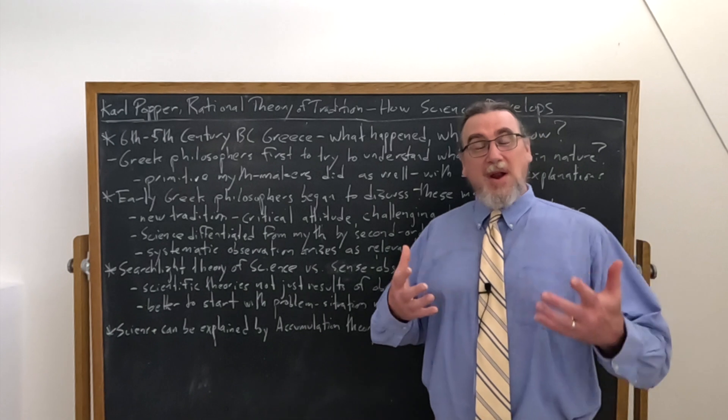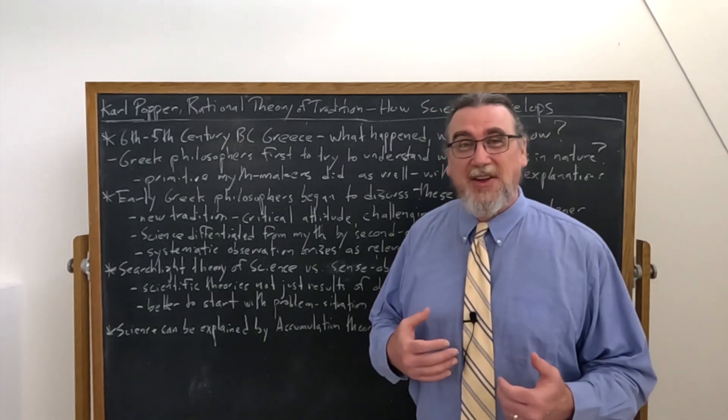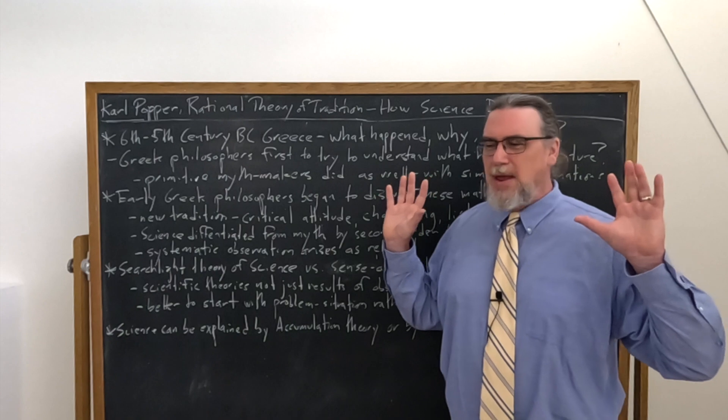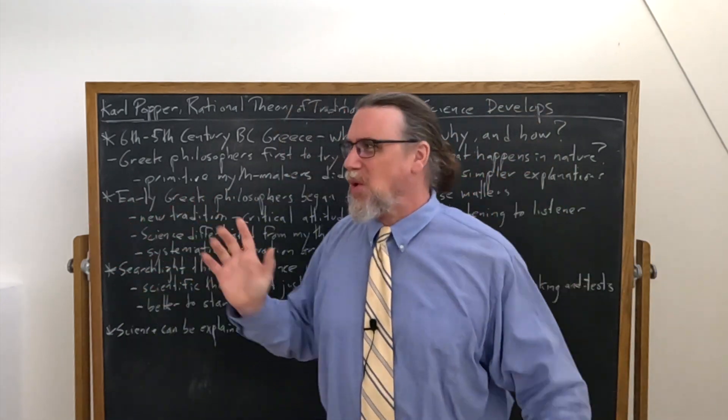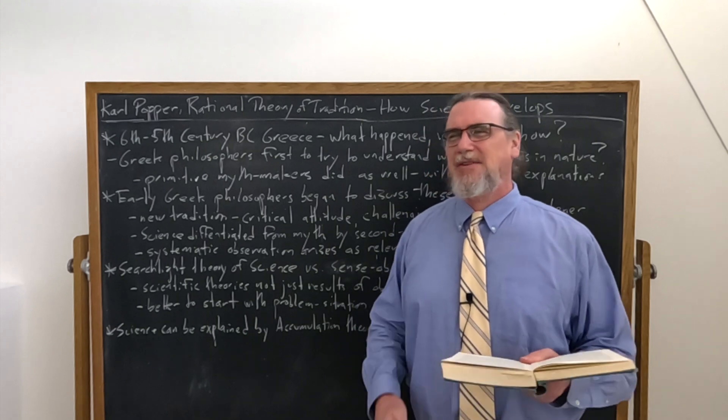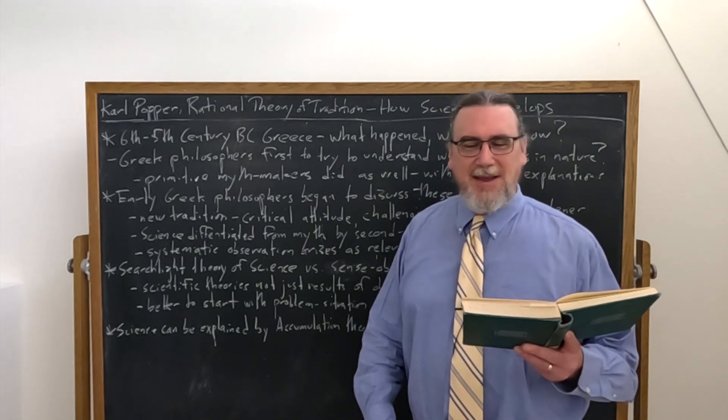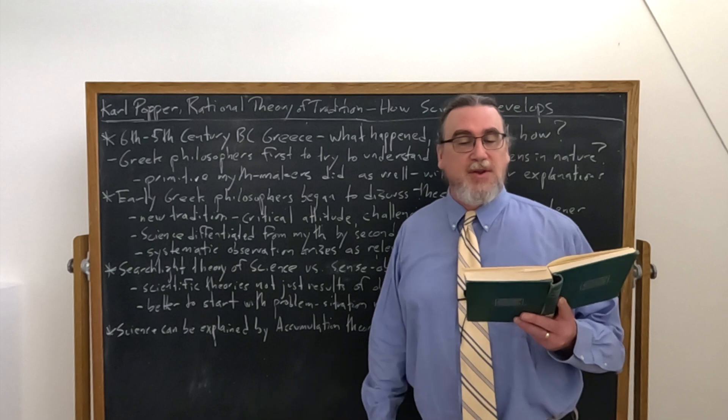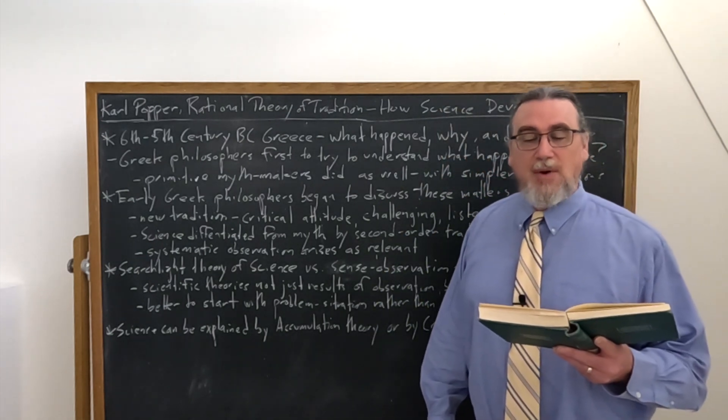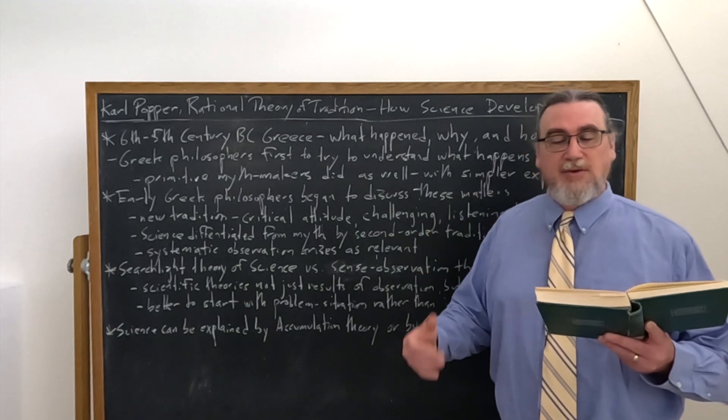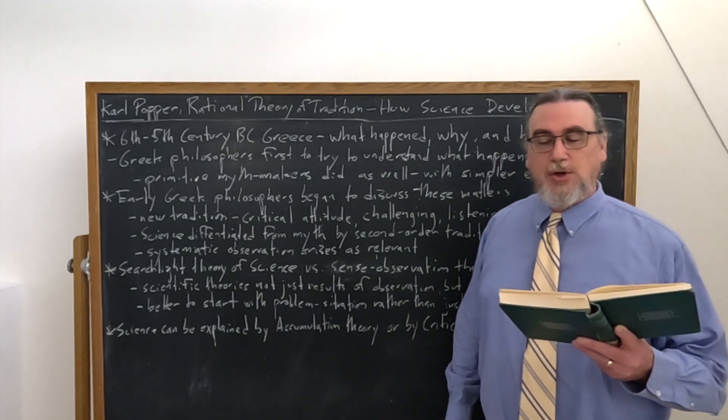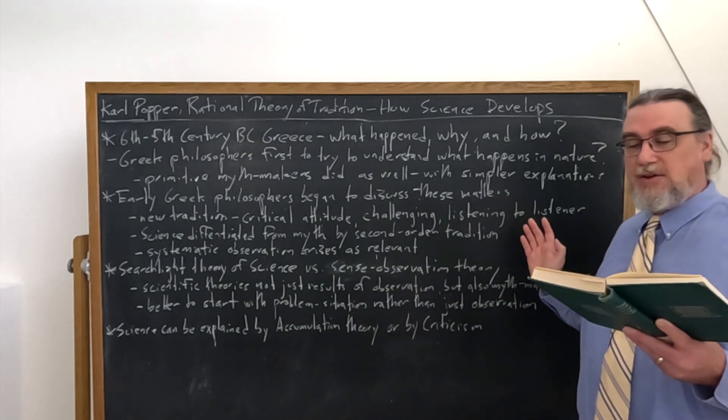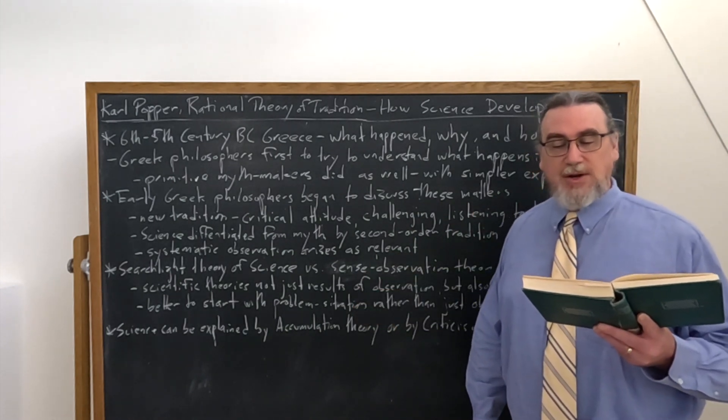He says if we want to think about how a young scientist ought to proceed, should we just give him the advice, get out there, don't have any preconceptions, just observe things, look around the world, take notes? And Popper says, no, that's not a good idea at all. He's badly advised if his teacher tells him, go around and observe. He's better advised if his teacher tells him, try to learn what people are discussing nowadays in science. Find out where the difficulties arise and take an interest in disagreements. Those are the questions you should take up. In other words, you should study the problem situation of the day rather than just going around and making a bunch of observations.